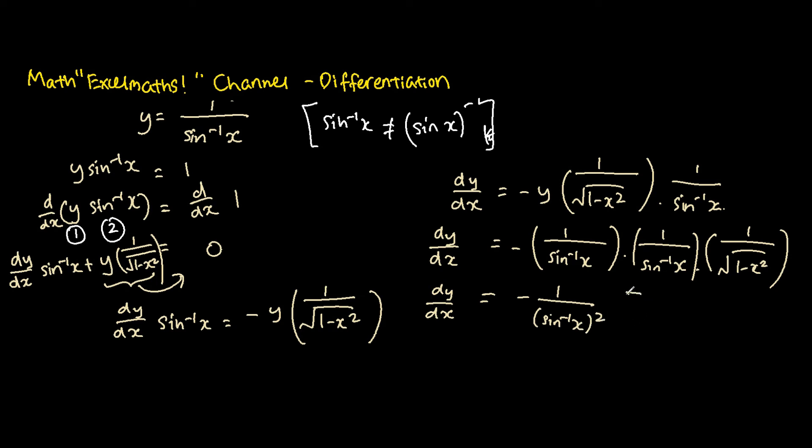The whole thing bracket, 1 over square root of 1 minus x squared. And that is it, that is the answer to this particular question, the differentiation of y equals 1 over sine inverse x.